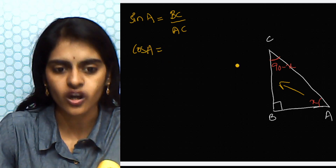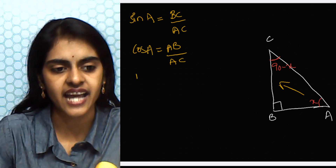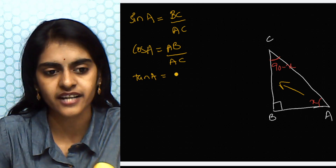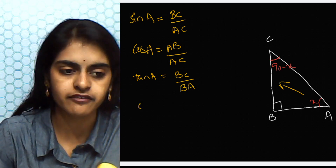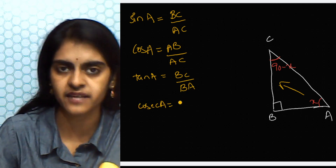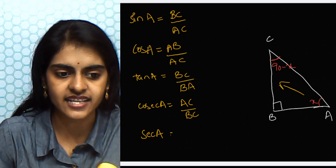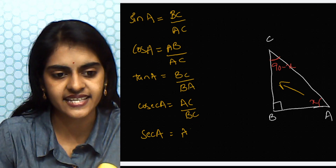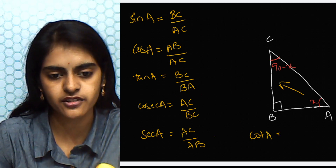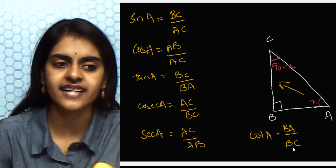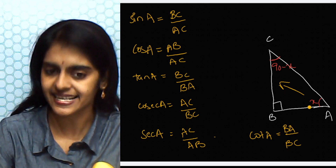Cos A = adjacent over hypotenuse = AB/AC. Tan A = opposite over adjacent = BC/AB. Cosecant A is the reciprocal of sine = AC/BC. Secant A is the reciprocal of cos = AC/AB. Cot A is the reciprocal of tan = AB/BC. These are the six trigonometric ratios with respect to angle A, which we are calling x.